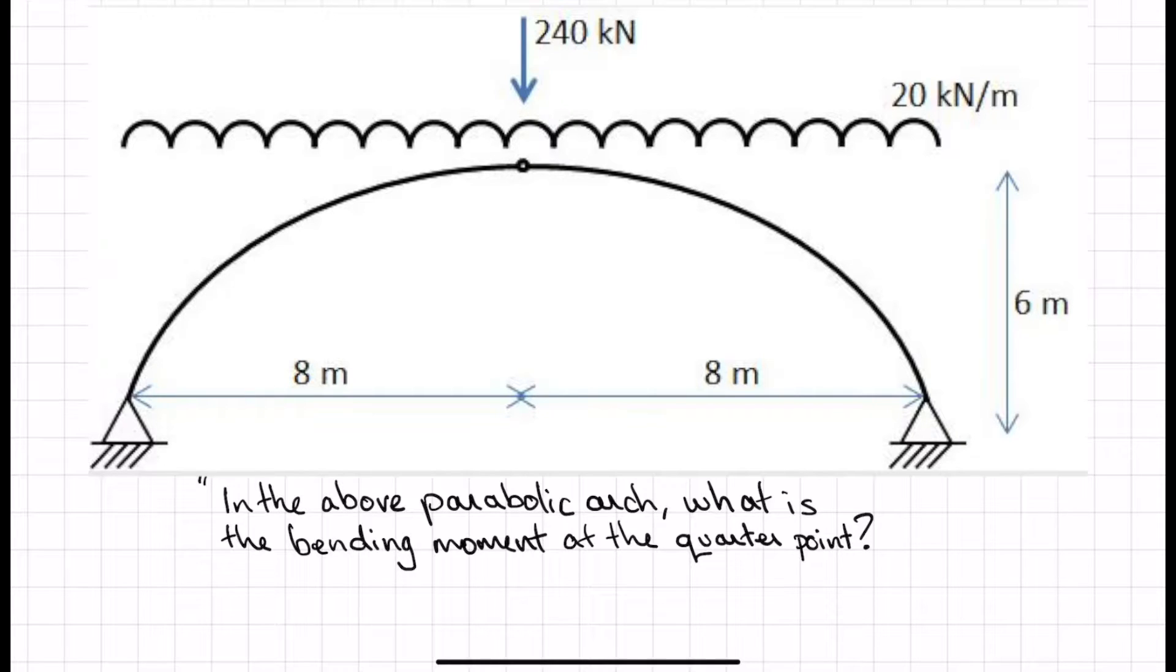Here we have another question from the iStructi Structural Behaviour course. You'll have to excuse the drawing because I haven't actually seen this in the wild. Someone actually sent it to me as a drawing. The question is, in the above parabolic arch, what is the bending moment at the quarter point? Give this problem a try yourself, pause the video, and come back to it when you're done.